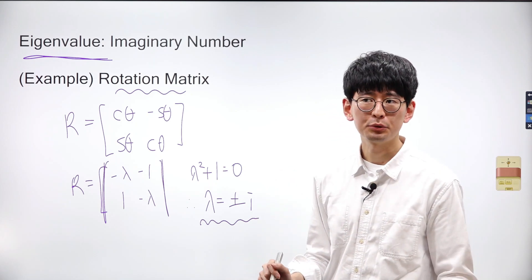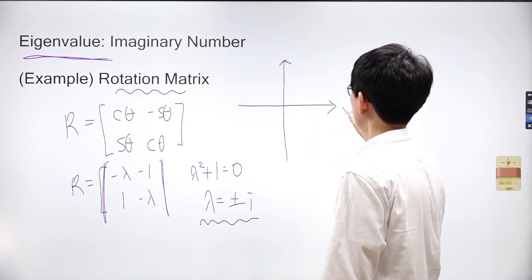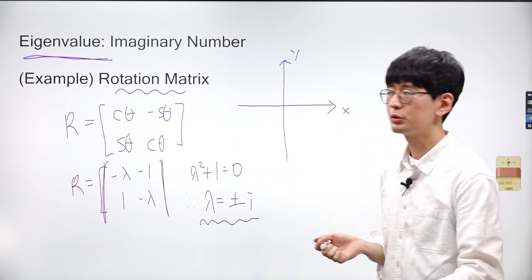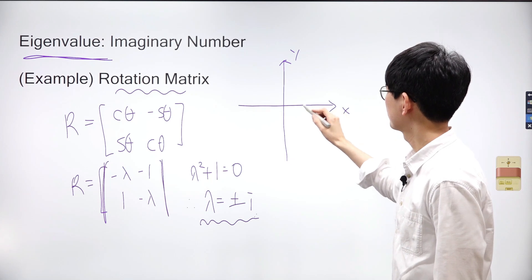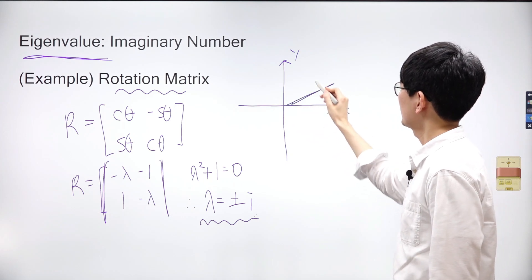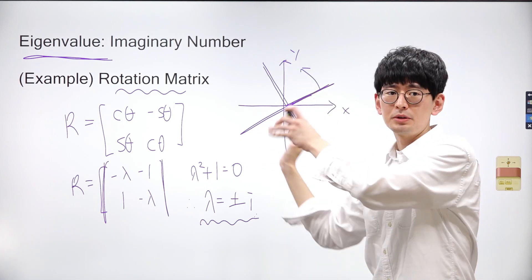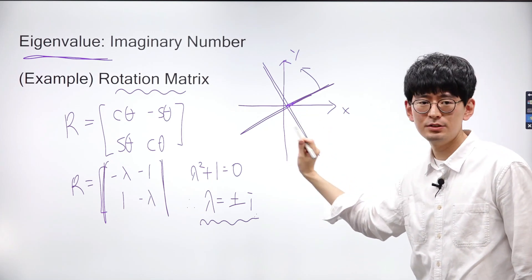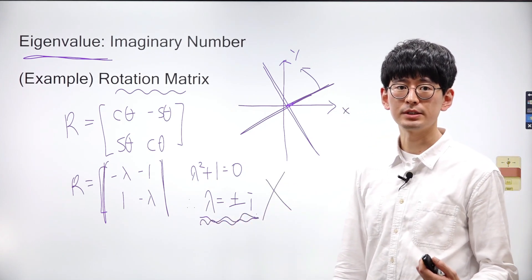When the value of an eigenvalue is an imaginary number, it implies that the corresponding eigenvector also contains imaginary numbers. This means that there are no vectors that maintain their directions after the transformation by the matrix. The rotation matrix R rotates the space by 90 degrees, which means the direction of every vector or line crossing the origin will be changed. Thus, imaginary eigenvalues imply that there are no vectors on the plane that maintain their direction after the transformation. So remember, if you obtain an imaginary number for an eigenvalue of a matrix, there are no vectors that maintain their directions after the transformation.